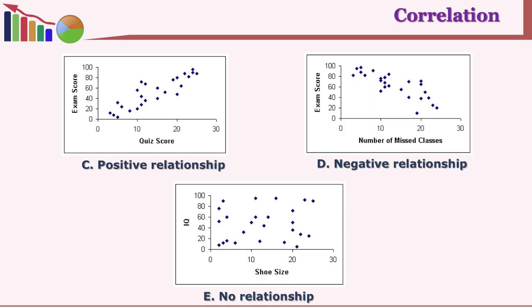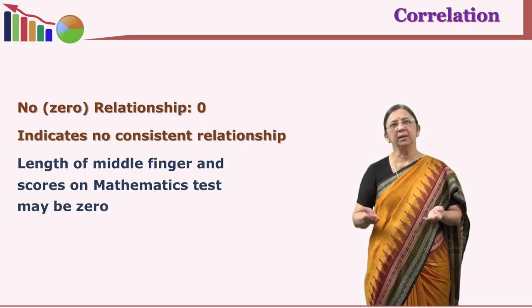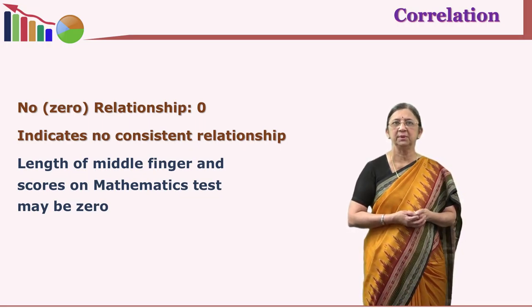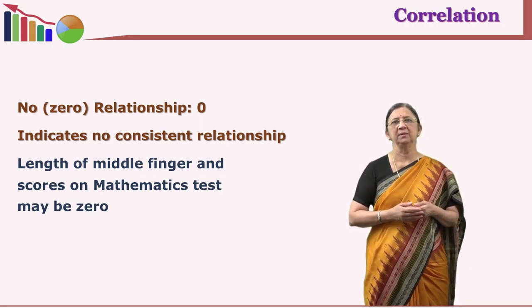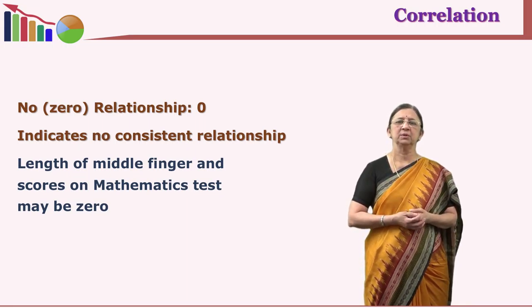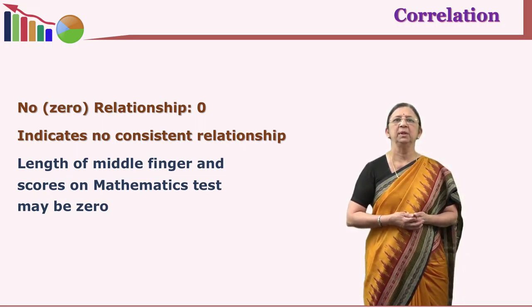The relationship can be positive, negative, or zero. For example, the length of the middle finger and math scores would be near zero — no meaningful relationship. When we say perfect relationship, the coefficient of correlation is 1. It ranges from 0 to 1: 0 means no relationship at all and 1 means perfect relationship. On both sides: +1 is a perfect positive relationship and −1 is a perfect negative relationship.